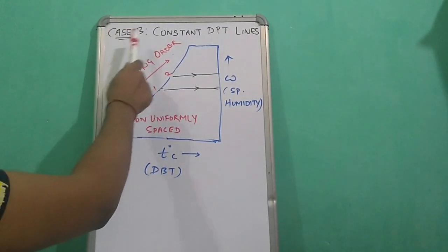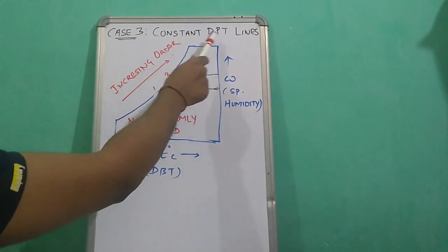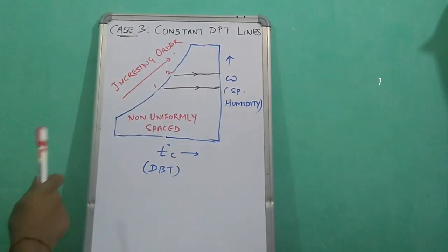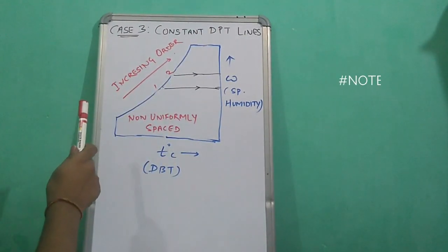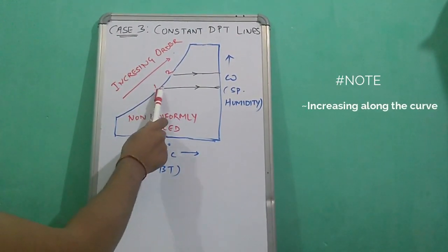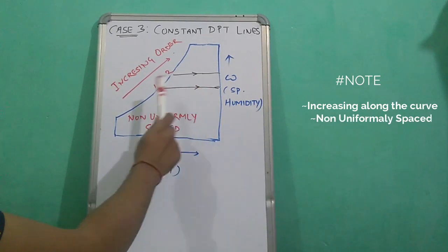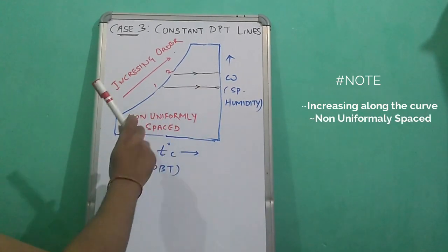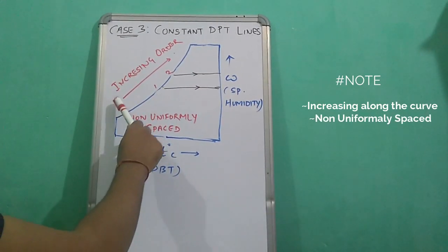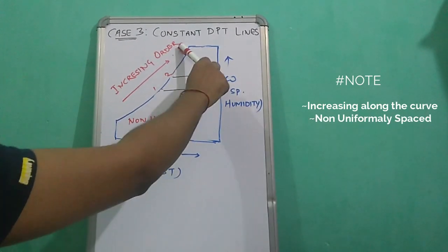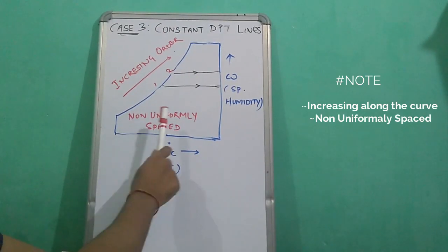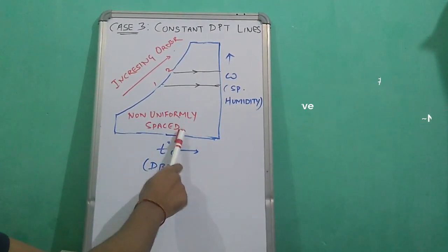Case 3: constant dew point temperature lines. These are horizontal lines moving from left to right, that is away from the saturation curve, increasing in that direction. These lines are non-uniformly spaced.